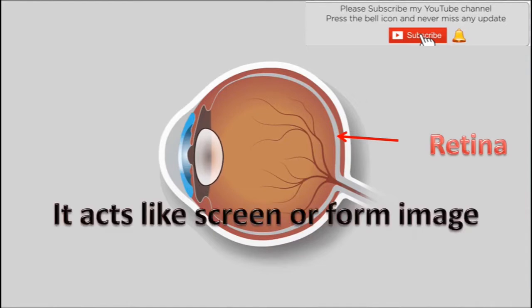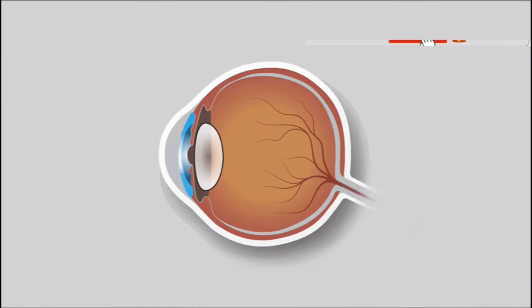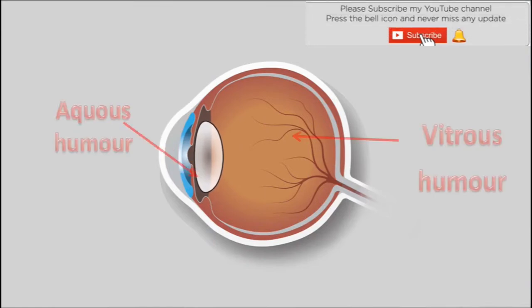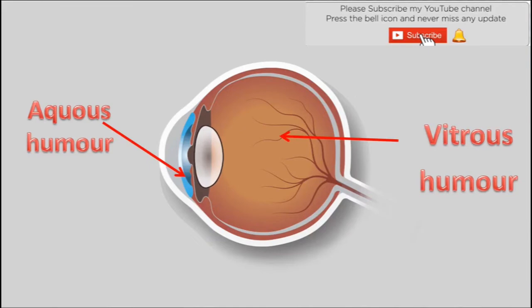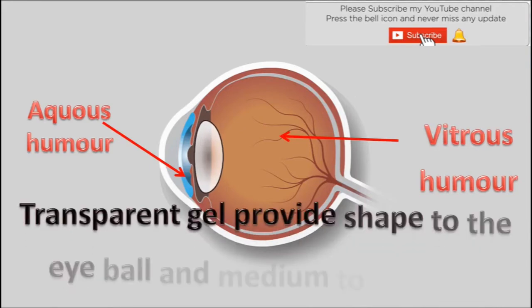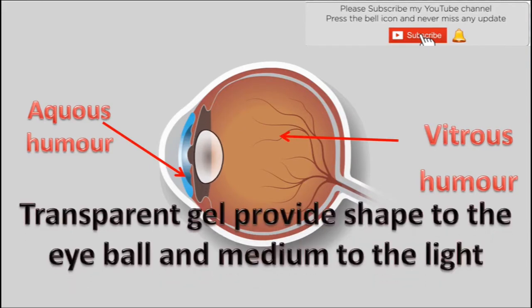Retina — it acts like a screen and forms the image of an object. Aqueous humor and vitreous humor — transparent gel that provides shape to the eyeball and acts as a medium for light.